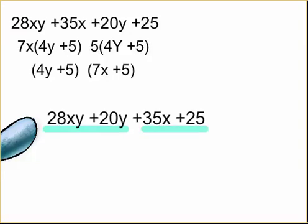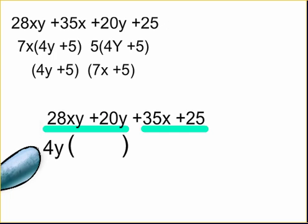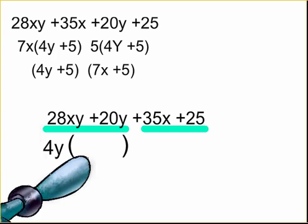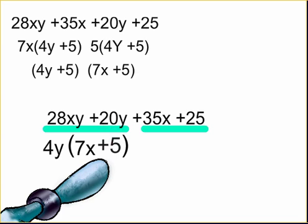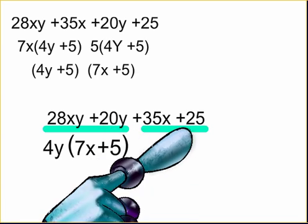Let's try it. First, we can factor a 4y out of the 28xy and 20y. 4y goes into 28xy 7x times. 4y goes into 20y 5 times.